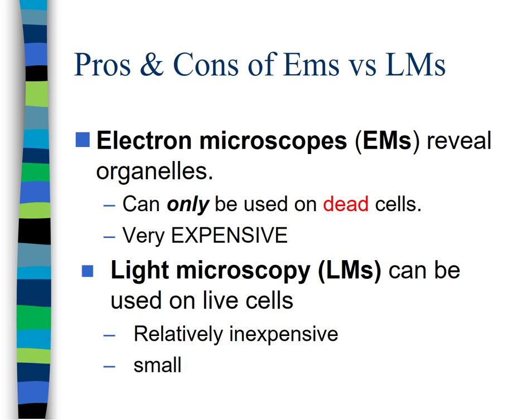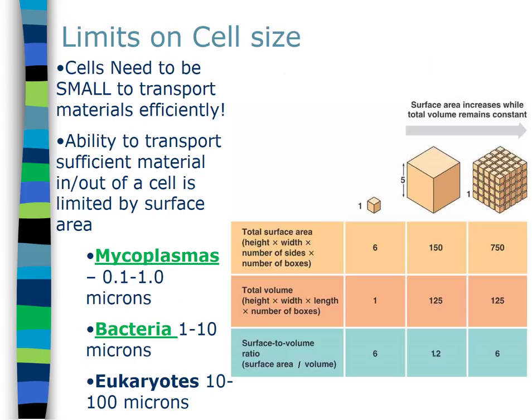Cells are small, and they're small for a reason. Cells need to move things from one side to the other, and most of that is done by diffusion — the movement from high concentration to low concentration. Diffusion is a relatively slow process, so if a cell is too big it won't move materials fast enough. That's why cells prefer to be small.